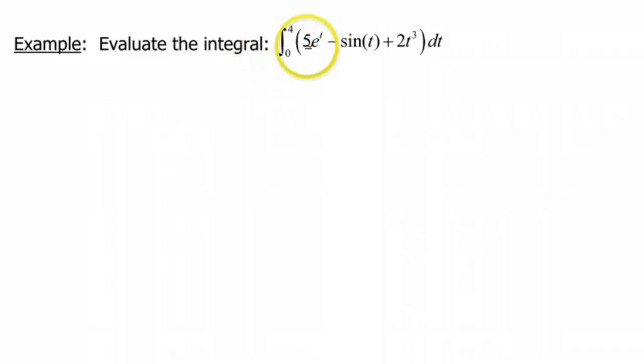So the antiderivative of 5e to the t. The 5 is just a constant, so that's gonna be brought along. And then the antiderivative of e to the t. Ask yourself the question, what function has a derivative that's e to the t? Well, that's just e to the t. So the antiderivative of e to the t is e to the t, and the derivative of e to the t is e to the t. Don't let that one get too confusing on you.